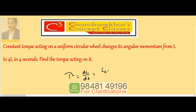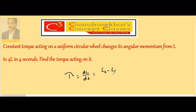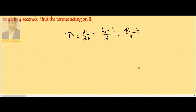That is L2 minus L1 by T. Here L2 is given as 4L and L1 is L, and the time given is 4 seconds. Therefore this becomes equal to 3L by 4. The torque on the body is 3L by 4.